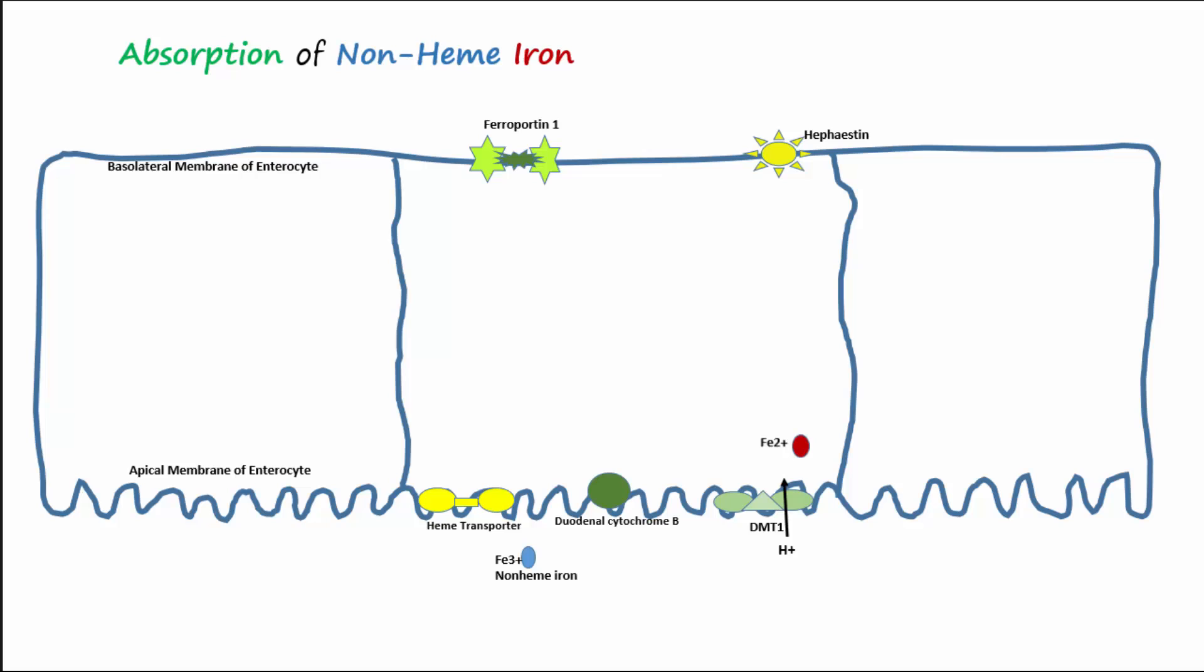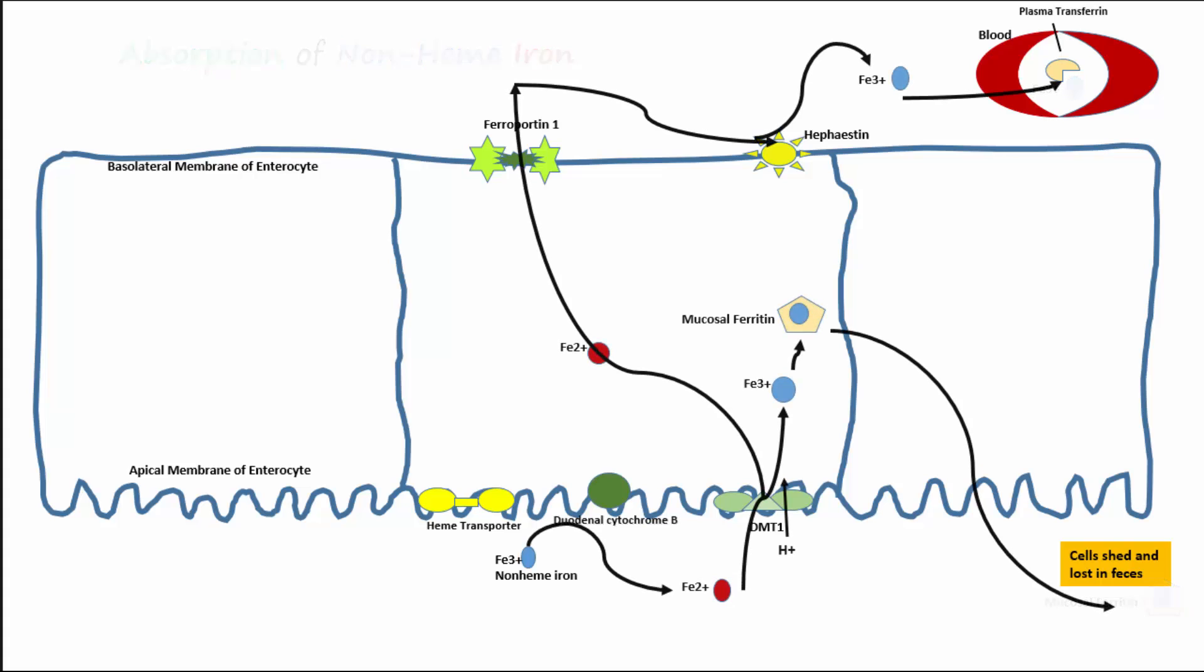At this point Fe2+ may follow either of two pathways. It may be incorporated into mucosal ferritin as Fe3+ and lost in the feces, or Fe2+ may leave the cell through ferroportin 1 and then be oxidized to Fe3+ by hephaestin and transported in the blood by transferrin. Please review this summary now to understand how non-heme iron is absorbed and processed.